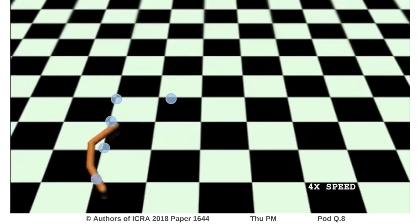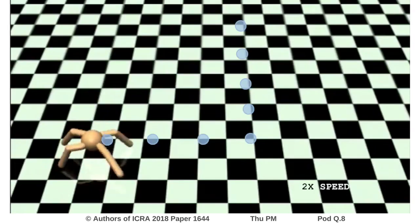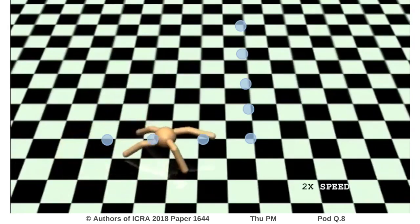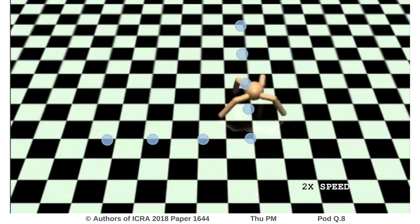Here, the same dynamics model of the swimmer is employed to perform a right turn. Here, the ant performs a sharp left turn.